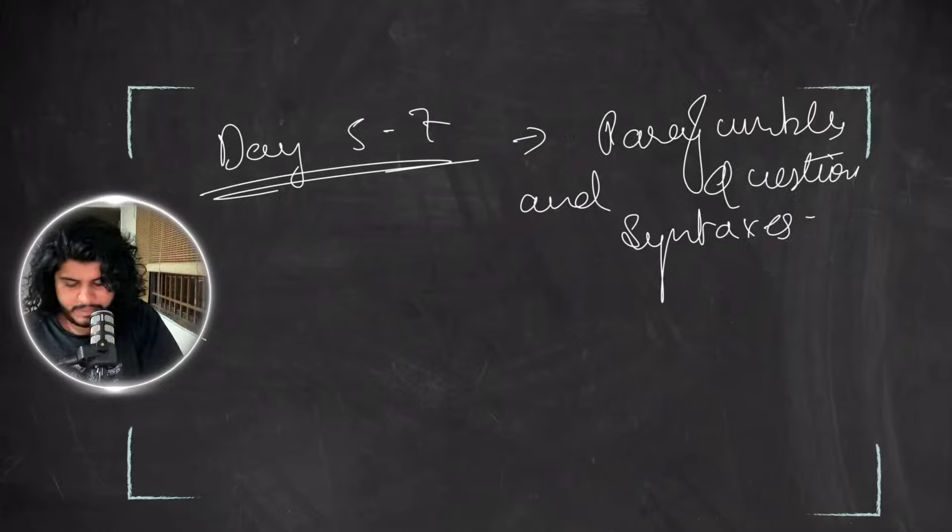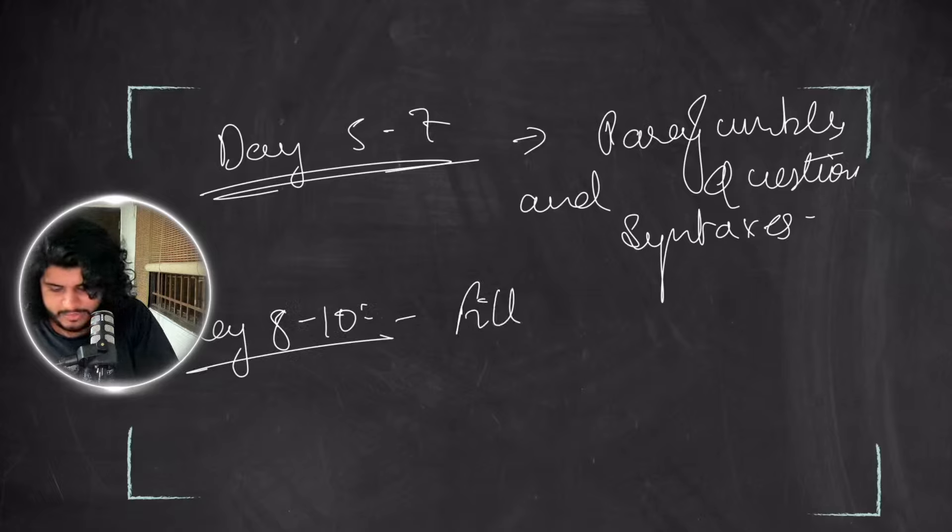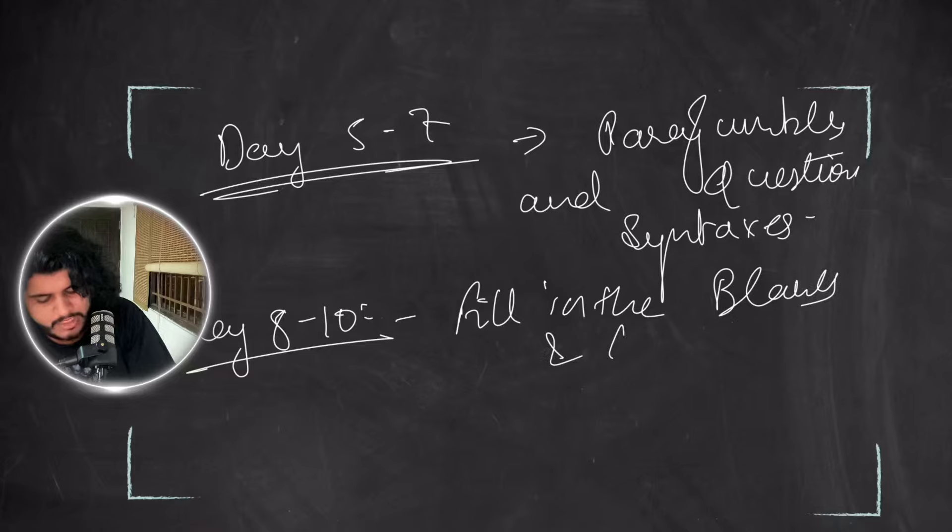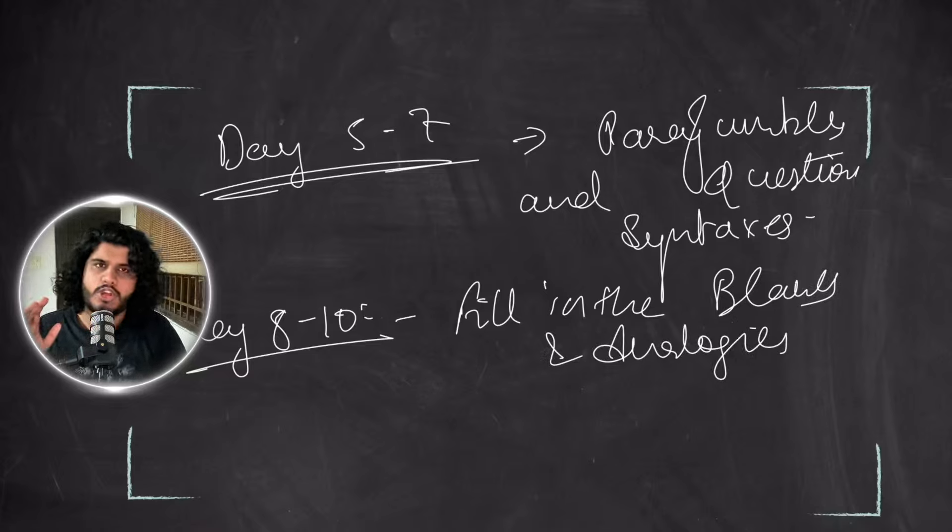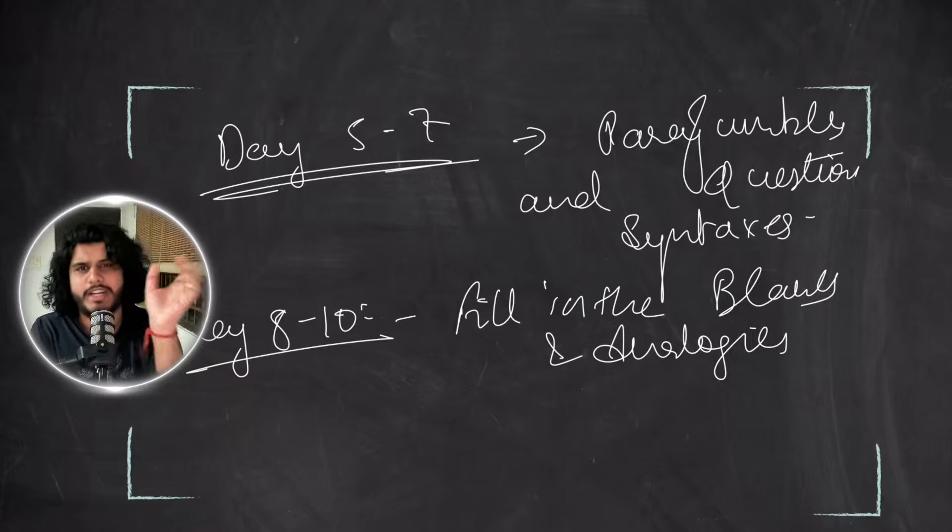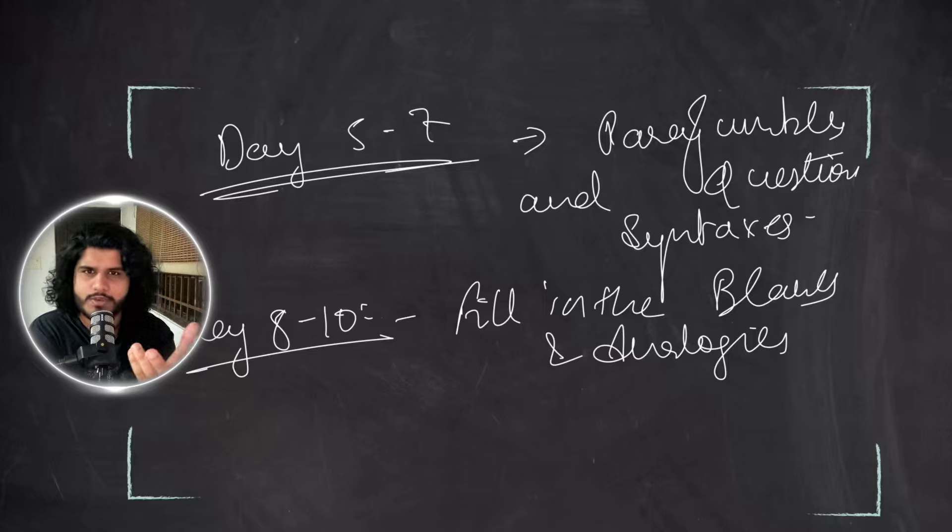Day 8 to 10: We're doing fill in the blanks and analogies. If you don't know what analogies are, check our CUET English video on syllabus where you'll see a detailed breakdown of question types. Analogies are basically relationship-building questions.